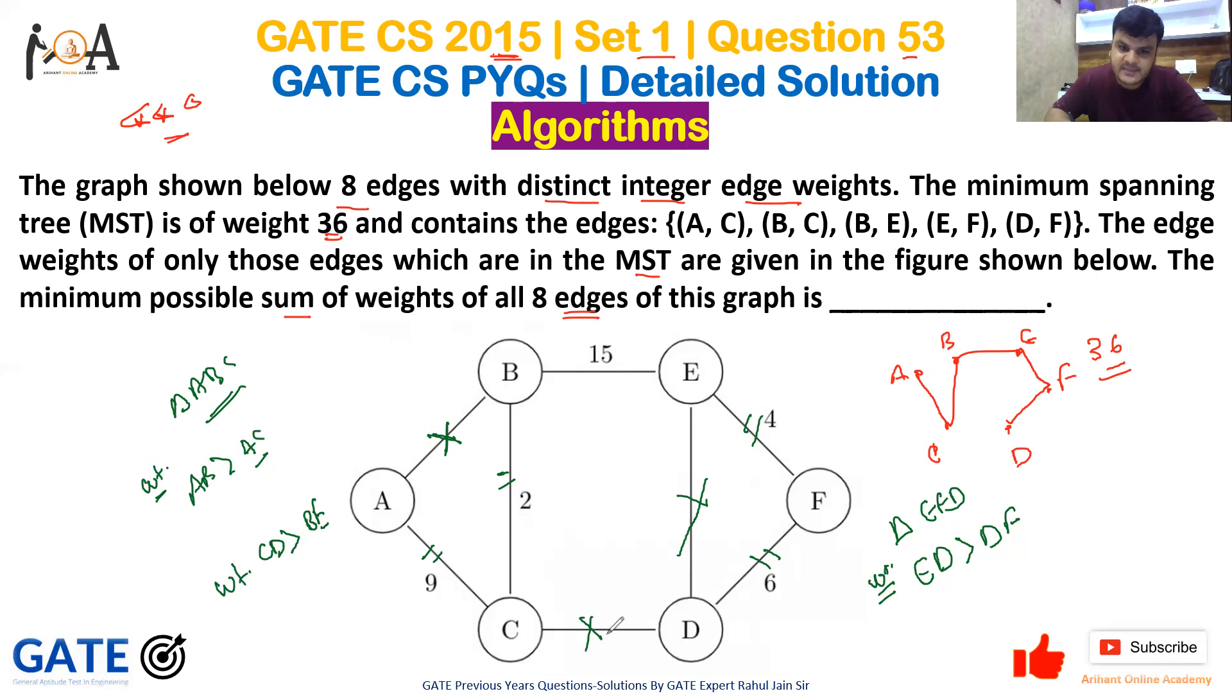We don't include C-D only for one reason in MST: it must have the greatest weight among these. C-D has the greatest weight compared to B-E, that's why we haven't taken it. If it were lesser, we would have taken it.